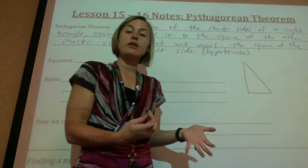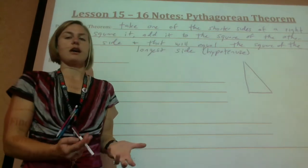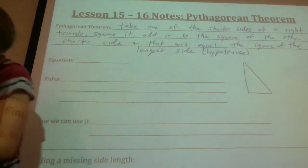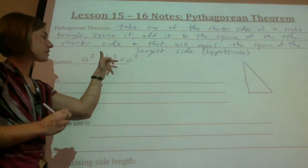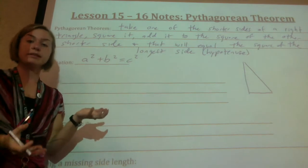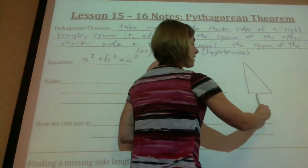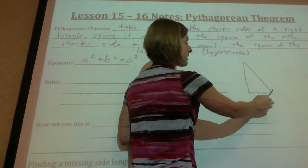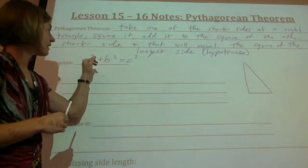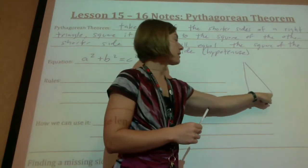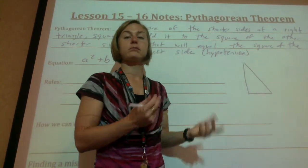There is an equation that goes along with this so that we can sum up all these long words in just a couple of things. The equation is: A squared plus B squared equals C squared. If we call this side A and this side B, then this side is C. C is always the longest side. So we take the shorter side and square it, the other shorter side and square it, and it equals the longer side squared.